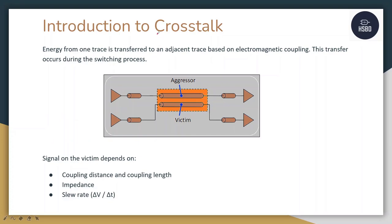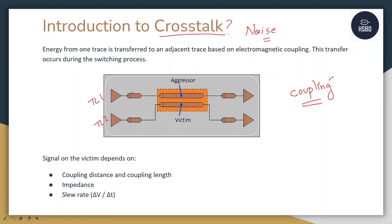Let me take you through a brief introduction of crosstalk. What is crosstalk? Crosstalk is a type of noise that occurs when two transmission lines try to couple with each other. The reason behind crosstalk is the coupling between two transmission lines. There is transmission line 1 and transmission line 2. Out of which one is an aggressor and the other one is victim. The aggressor is the transmission line that produces the noise in the victim.